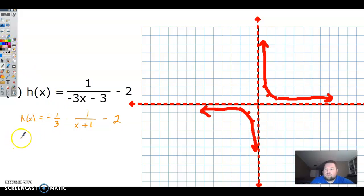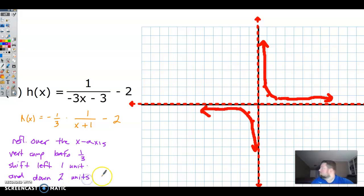So this is going to, let's start with that negative actually. So it's going to be a reflection over the x-axis. It's going to be a vertical compression by a factor of a third. Then we're going to shift left one unit and down two units.